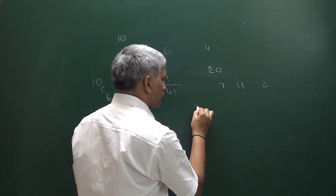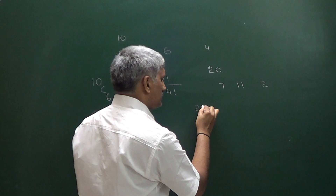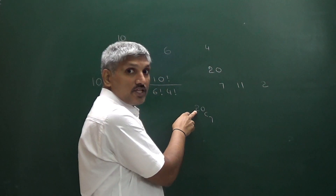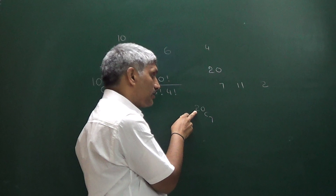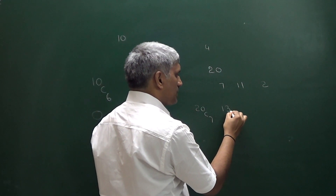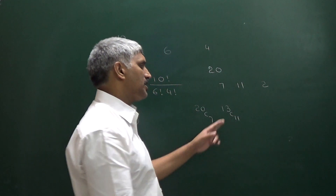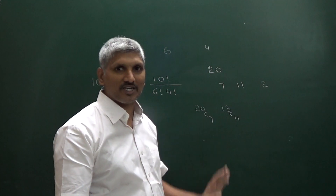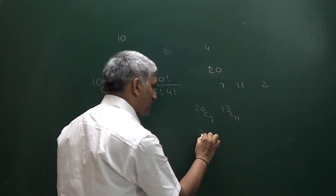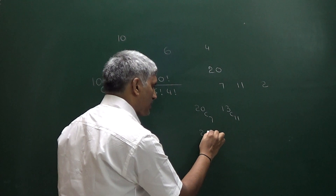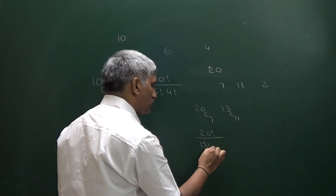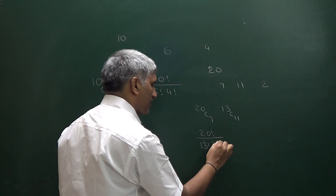First of all, from 20 select 7. Now remaining items are 13. From those 13, select 11, and the remaining 2 items form another group. Now 20C7 can be written as 20 factorial divided by 13 factorial into 7 factorial.